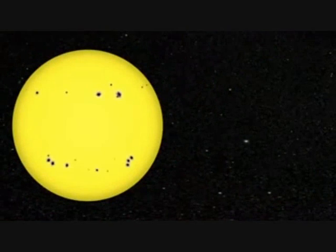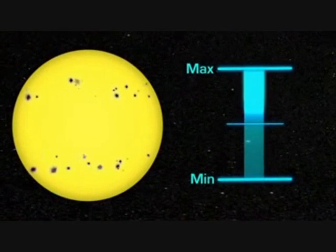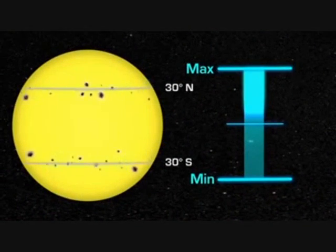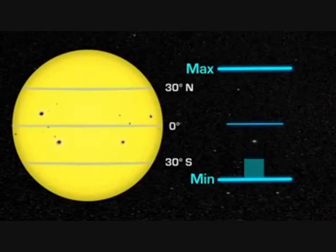During this cycle, the location of the sunspots also changes. They are at middle latitudes during solar maximum and move closer to the equator as the sun approaches solar minimum.